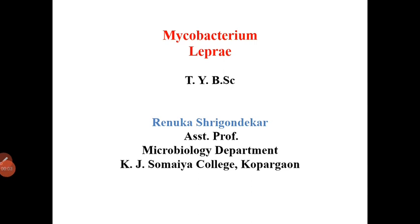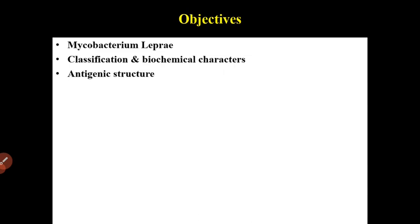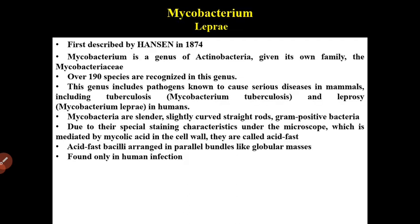Hello students, let's start with Mycobacterium leprae. Objectives: classification and biochemical characters, antigenic structure, viability characteristics. Mycobacterium leprae, although the first member of the genus Mycobacterium, is the only pathogenic bacteria of man that has not yet been convincingly cultivated in vitro.